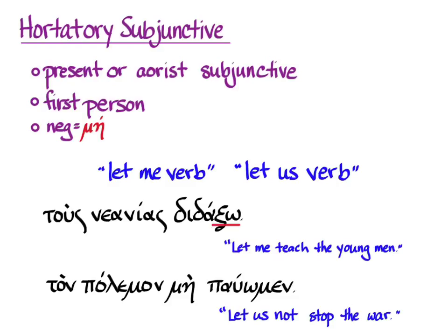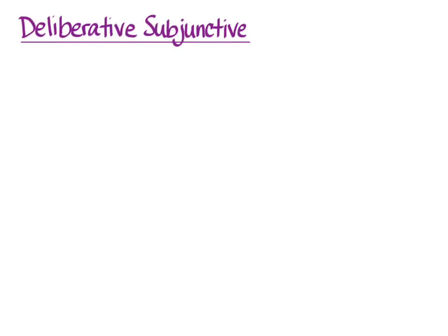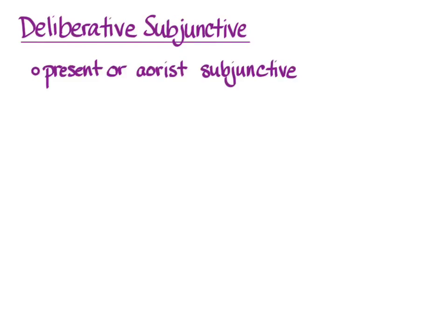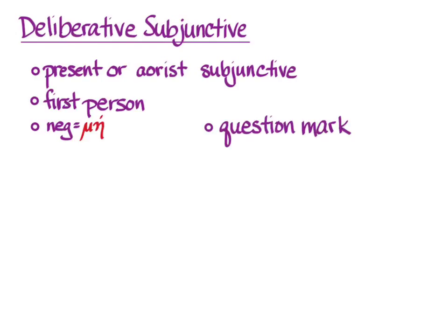Our second independent subjunctive is the deliberative subjunctive. And just as it sounds, Greek uses it to consider a course of action. It can use the present or aorist subjunctive — tense is only about aspect — and it will be in the first person. The negative is mē. What distinguishes it from the hortatory subjunctive is that it's a question, so there will be a question mark.